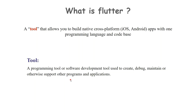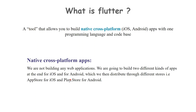Now let us move to our second keyword: native cross-platform applications. We are not building web applications. We are going to build two different kinds of applications — one for iOS and one for Android — which we then distribute through different stores: the App Store for iOS and the Play Store for Android.